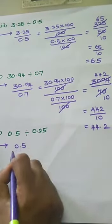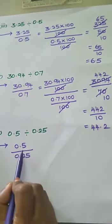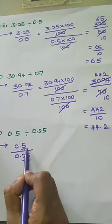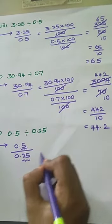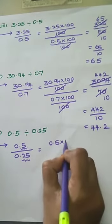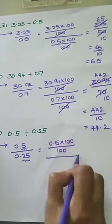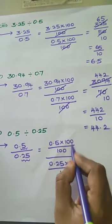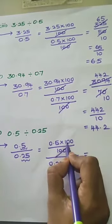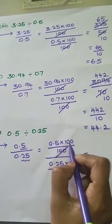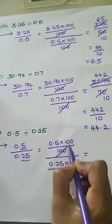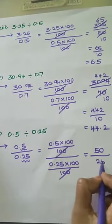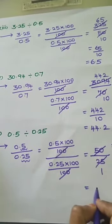Next: 0.5 divided by 0.25. The numerator value is 0.5 and the denominator is 0.25. The denominator has two decimal places and the numerator has only one, so we choose the value 100. We multiply the numerator by 100 and divide by 100. Same for the denominator: 0.25 into 100 by 100 — the 100s cancel. Multiplying 0.5 by 100 moves the decimal point two places right; we have only one place so we add an extra zero, giving 50. The denominator 0.25 into 100 gives 25. So 25 twos are 50, and the answer is 2.